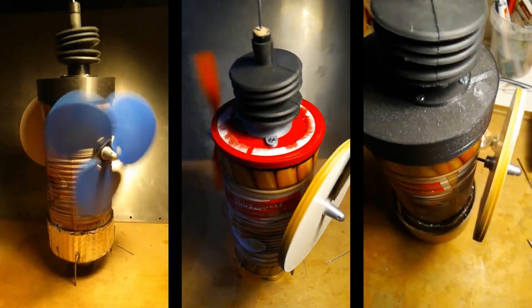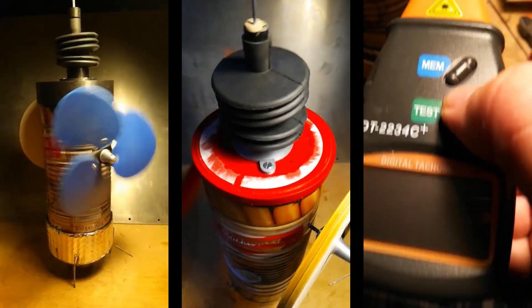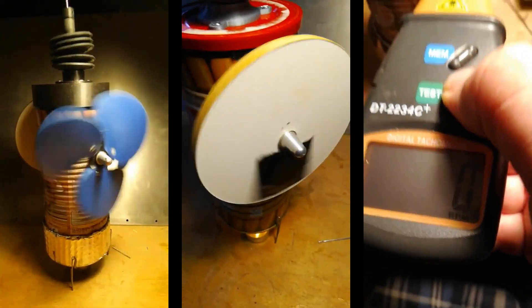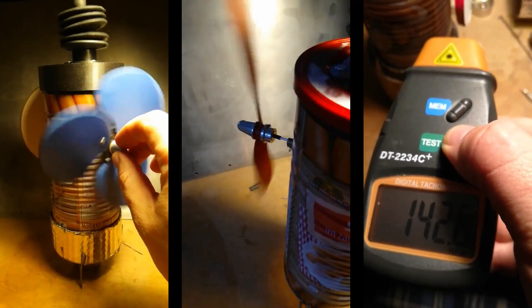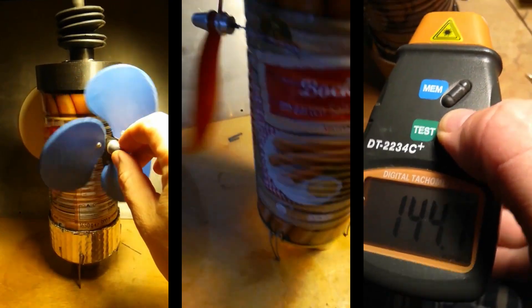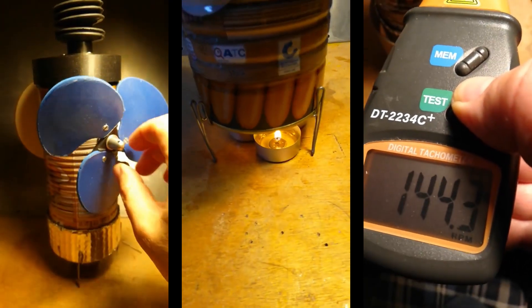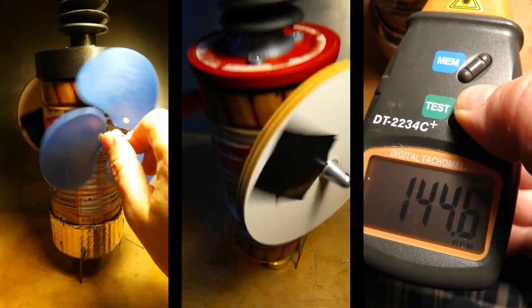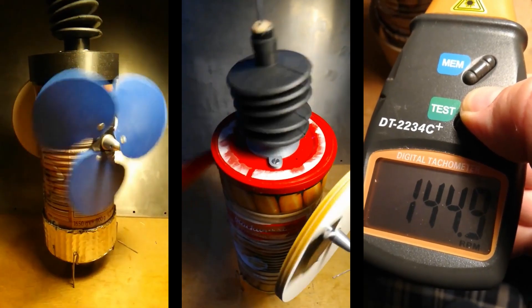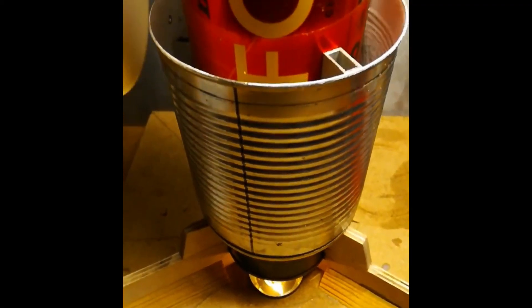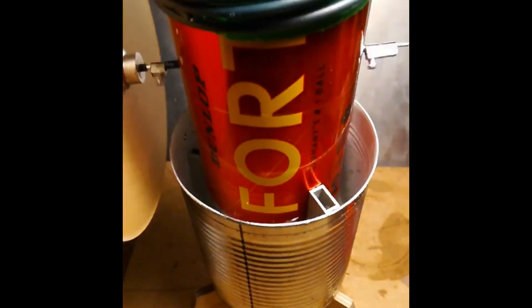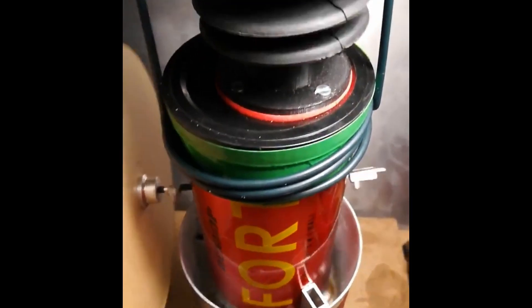My attempts to cool the engine with air proved less effective than water cooling. Despite numerous experiments with ventilation and airflow, the engine's temperature remained too high. It wasn't until I decided to use water cooling that I noticed a significant improvement. Water allowed for more efficient heat dissipation from critical areas of the engine, which significantly lowered its temperature and improved performance. This observation was crucial for further refining my project.